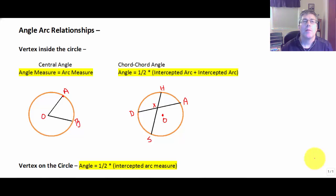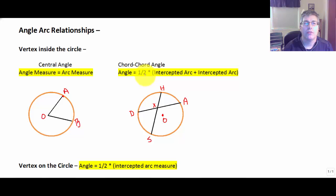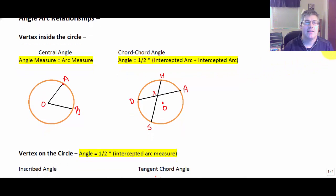Welcome back. In this video I'm going to explore different angle and arc relationships and define different types of angles that we will use working with circles. I'm going to divide these into three different categories: angle and arc relationships when the vertex is inside the circle, when the vertex is on the circle, and when the vertex is outside the circle.